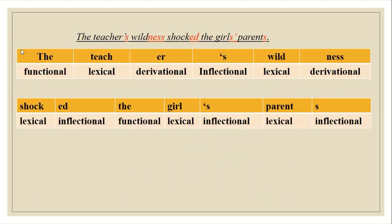Let's discuss this sentence to identify how many morphemes are used: 'The teacher's wildness shocked the girl's parents.' Breaking it down: 'the' (functional), 'teach' (lexical), '-er' (derivational), '-s' (inflectional/possessive), 'wild' (lexical), '-ness' (derivational), 'shock' (lexical), '-ed' (inflectional), 'the' (functional), 'girl' (lexical), '-s' (inflectional), 'parent' (lexical), '-s' (inflectional).